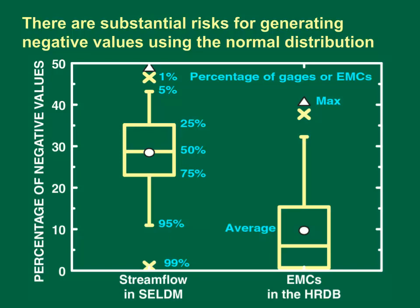The vertical axis shows the percentage of generated values that would be less than zero by using the normal distribution. The horizontal axis is a categorical axis showing the stream gauges in SELDM and the event mean concentrations in the highway runoff database. There are statistics for 2,783 stream gauges in the SELDM model which are used to generate the pre-storm stream flows. The coefficients of variation range from 0.16 to 40 with a median of 1.78 and an average of 2.4. Based on these values, more than 99% of the stream gauge statistics will result in one or more negative values.